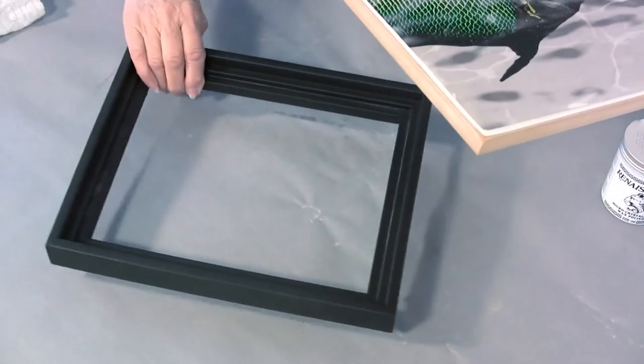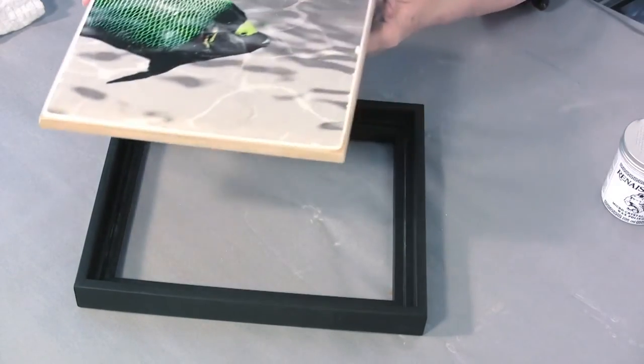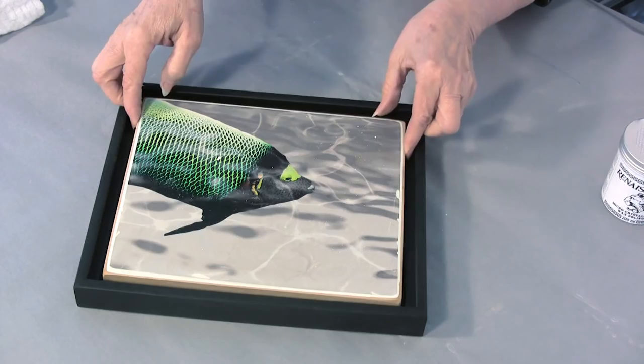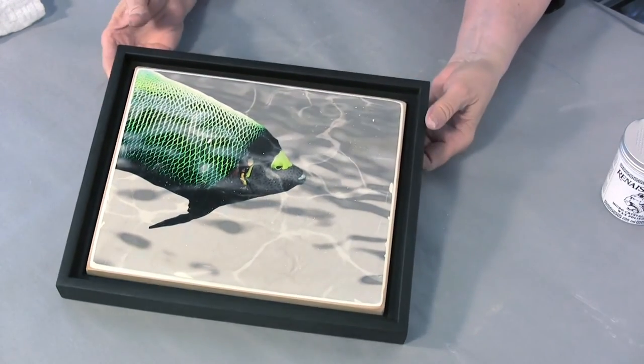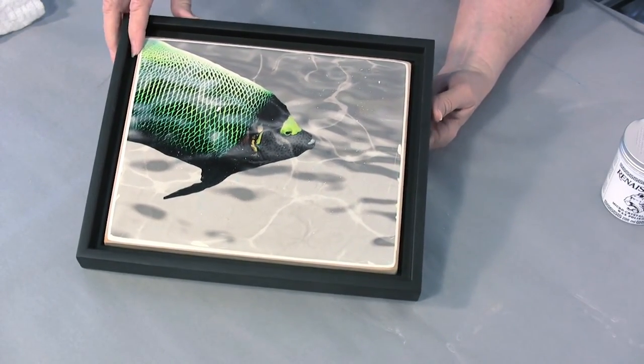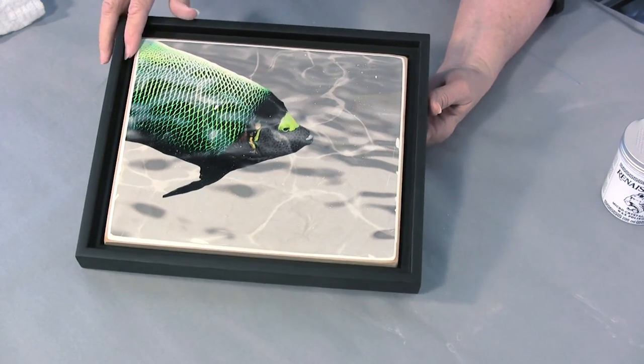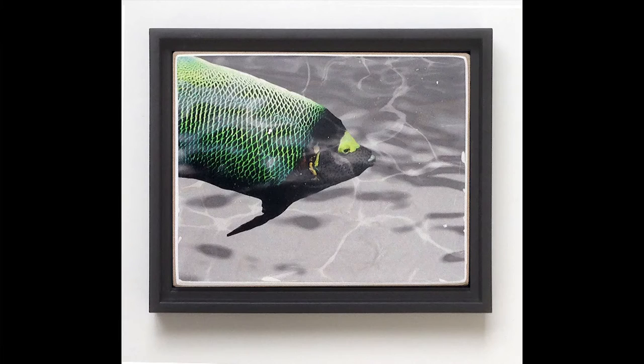I prefer to use what's called a floater frame. A floater frame allows you to still have the reveal of your piece show and also to set it off with a nice black frame. These floater frames are available in natural woods and colors. I kind of like the black on most of mine. It looks great in a show.